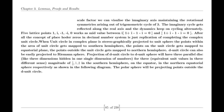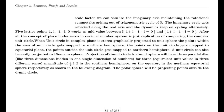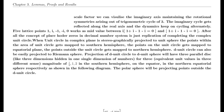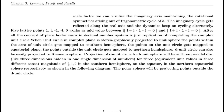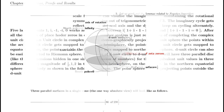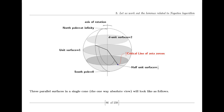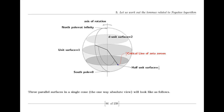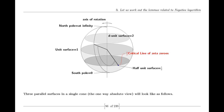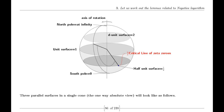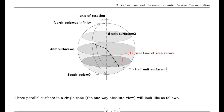Introducing a new function in a proof involving well-known objects like the gamma function might raise concerns. However, the delta function is not a departure from the gamma function; rather, it builds on and extends the gamma function's properties to meet the specific needs of this proof. Its introduction is necessary to address the complexities involved in the behavior of the zeta function under the alternate functional equation. The delta function is a carefully derived extension of the gamma function, designed to support the unification and extension of the zeta function in my proof of the Riemann hypothesis.